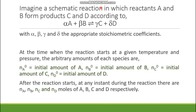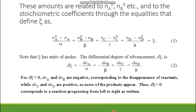Consider a reaction where alpha moles of A and beta moles of B react reversibly to produce gamma moles of C and delta moles of D, where alpha, beta, gamma, and delta are the stoichiometric coefficients. At the initiation of the reaction, the respective amounts of A, B, C, and D are N_A0, N_B0, N_C0, and N_D0. At any instant during the reaction, if we stop and measure all species, the amounts are N_A, N_B, N_C, and N_D respectively.